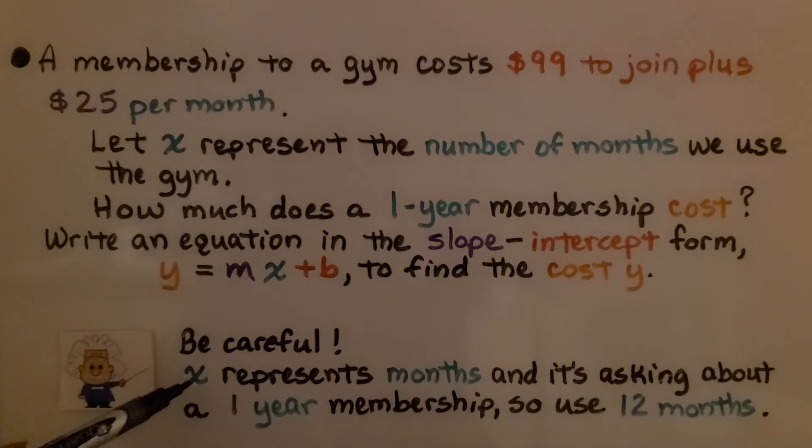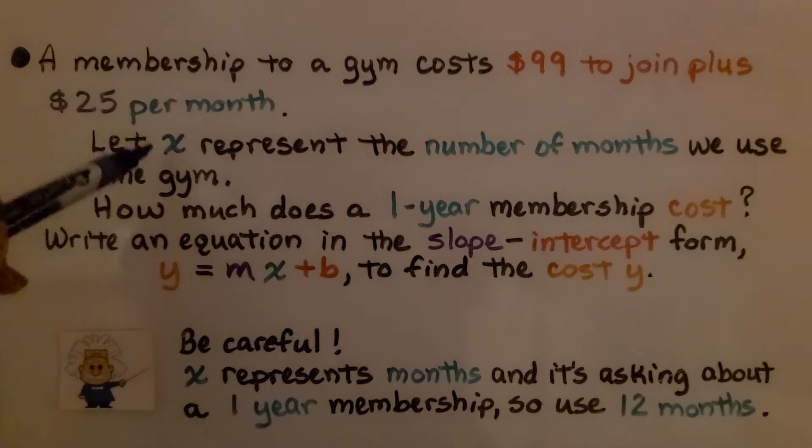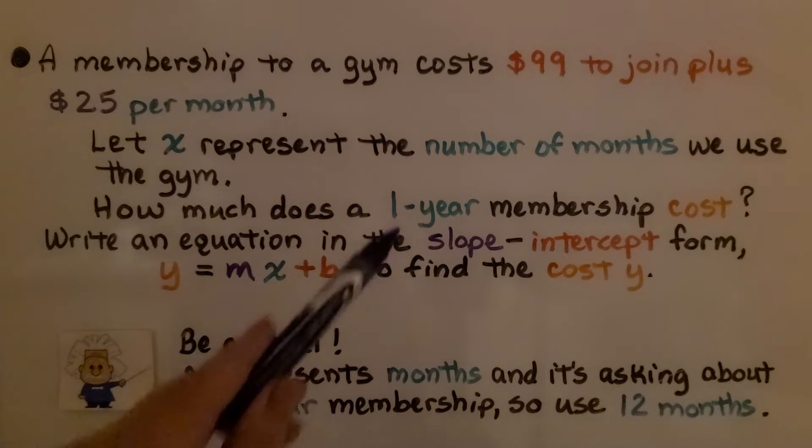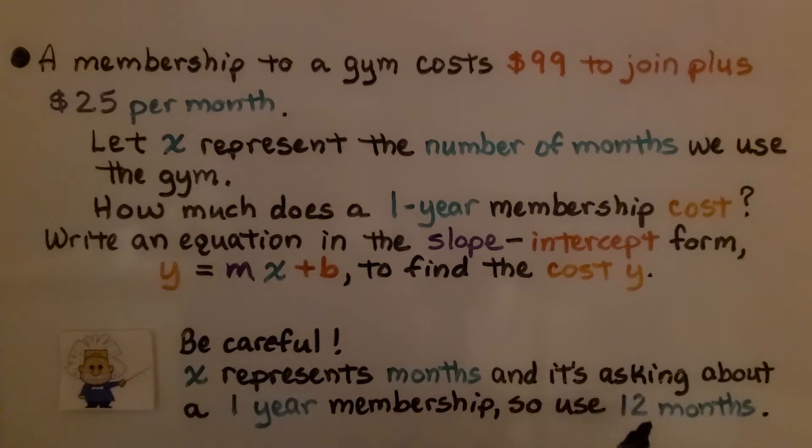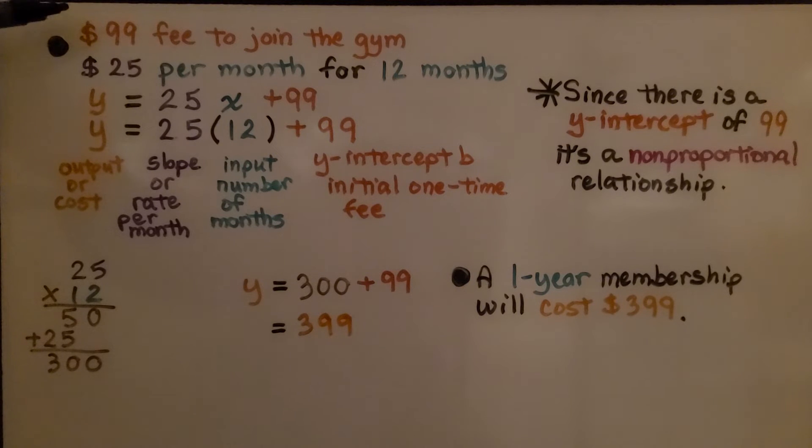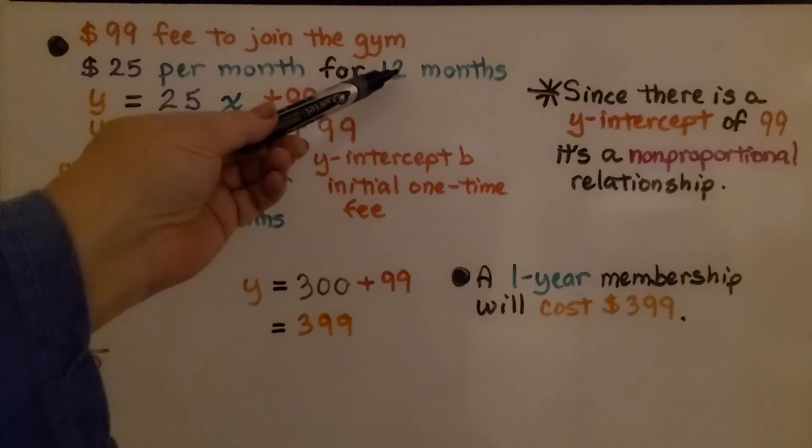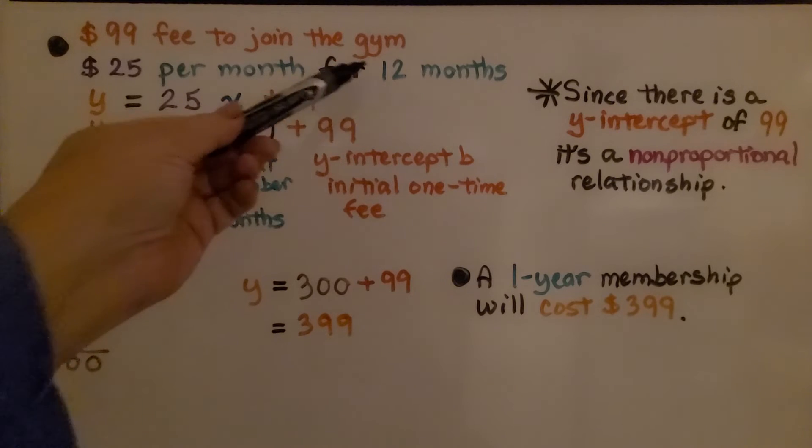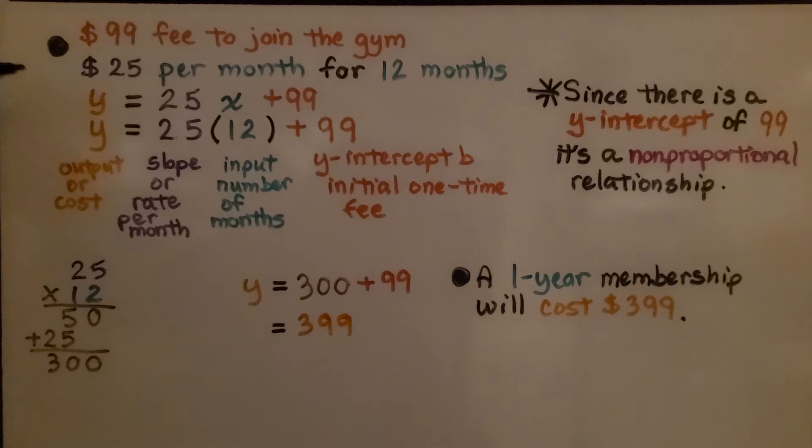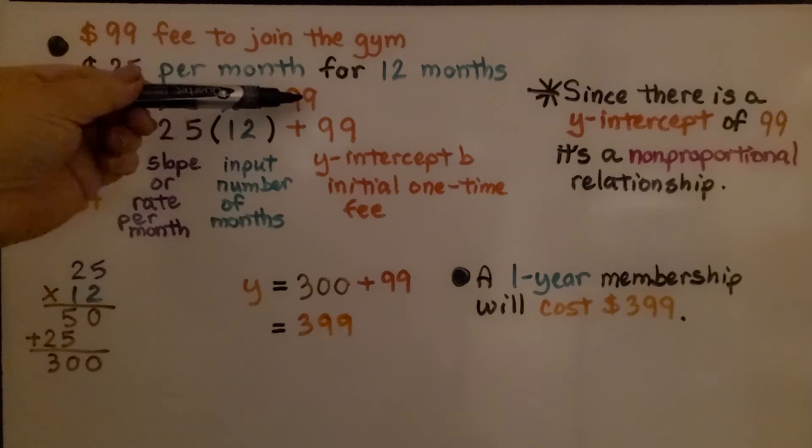Be careful. x represents months. It says per month. It's going to be the number of months. But it's asking about one year, so we're going to use 12 months. We know that there was a $99 fee to join the gym and there was a $25 per month fee. And we're going to do it for 12 months because we need to find it for one year. Our equation is y = 25x + 99.